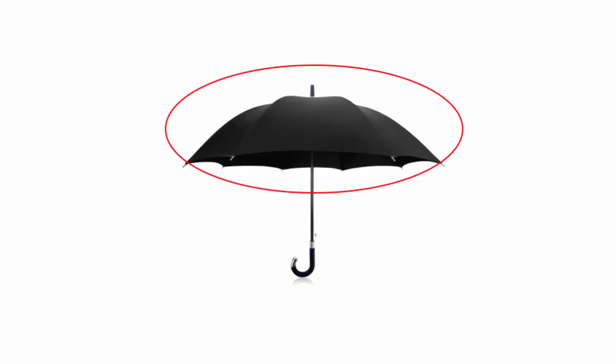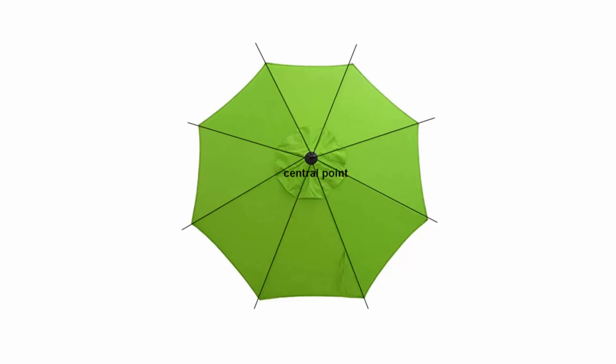Umbrella structure means if you look at the canopy structure or the top portion of an umbrella, there will be a central point, and from there wires — or ribs — extend to the edge of the canopy. So this whole shape looks like a structure where the central point refers to some central body, and the ribs or wires that extend out act like branches underneath the central body.